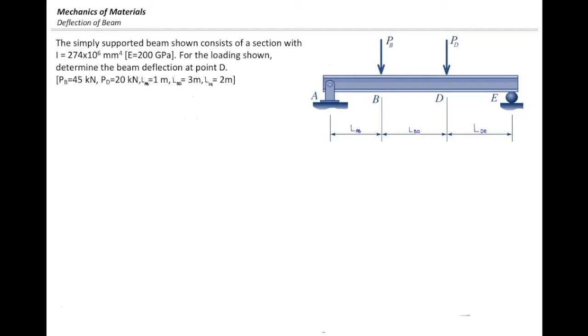A simply supported beam shown in the figure consists of a section with the moment of inertia equal to 274 million millimeters to the fourth and the modulus of elasticity of 200 gigapascal. Other parameters like the magnitude of the forces and the length of the beam at each part are provided. The problem says, determine the beam deflection at point D.